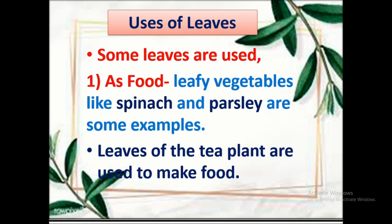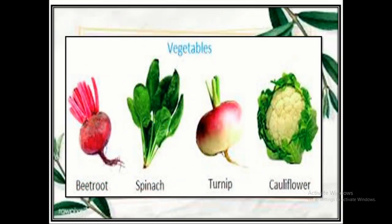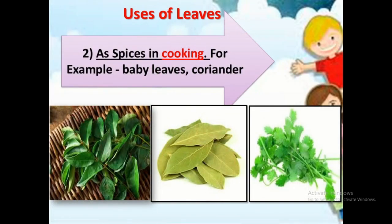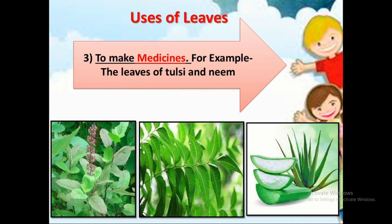Now let us see the uses of leaves. Some leaves are used as food, like spinach and parsley. Tea plant leaves are also used. Vegetables such as beetroot, spinach, turnip, and cauliflower include leaves we use as food. Curry leaves, bay leaves, and coriander are all used as spices. Leaves are also used to make medicines — Tulsi and neem leaves are used for medicinal purposes.